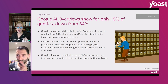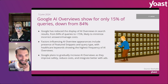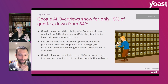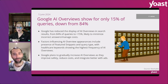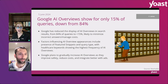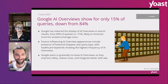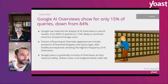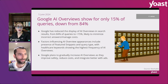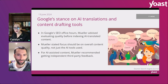In the US, Google AI Overviews are now only showing for about 15% of queries instead of 84%. It seems like they're ratcheting it back to safer categories and safer terms. We do know that they're still showing for a lot of healthcare queries, so if you describe symptoms, it will attempt to answer. Google is clearly making adjustments and continuing to refine the process — they're not going to completely roll it back.